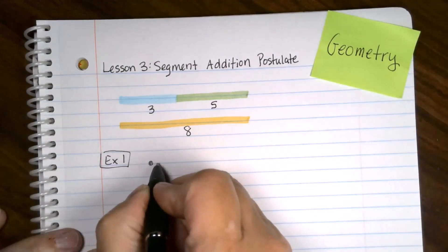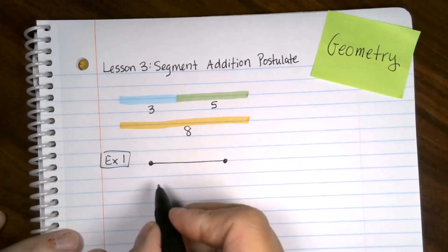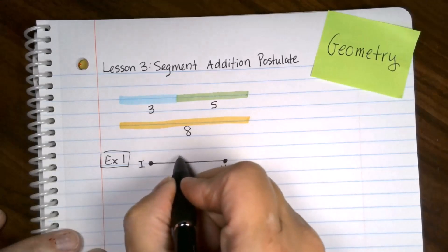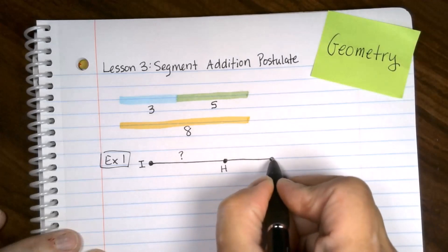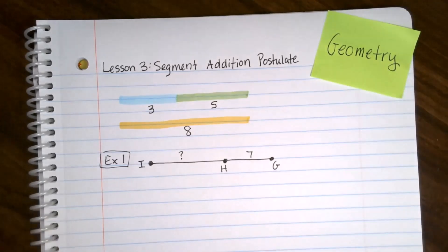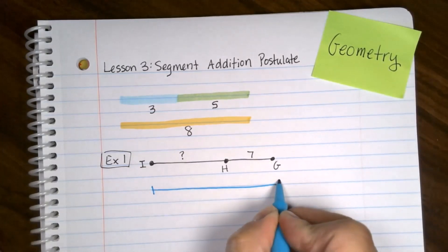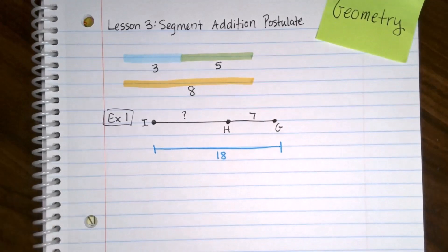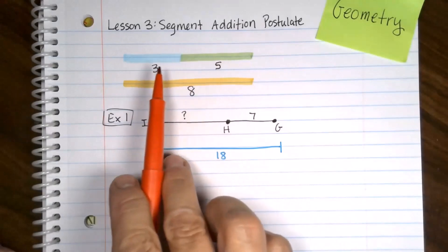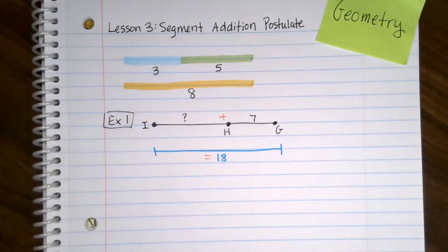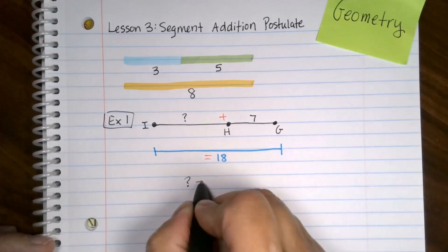I am going to have one segment that is the letter I to H. And this is the one I don't know. I don't know how long that is. I have another segment next to it that goes from H to G and it is seven units long. And I'm told that the distance from I all the way to G is 18. Whether I'm shown that in a diagram or I'm told that with words, that's what it means is that the whole thing is 18. Now to solve that, we have to use what we know. The Segment Addition Postulate says that if you have two pieces put together, you add them up. So this piece we don't know plus this seven is going to equal that 18. So setting that up, I got question mark plus seven equals 18.